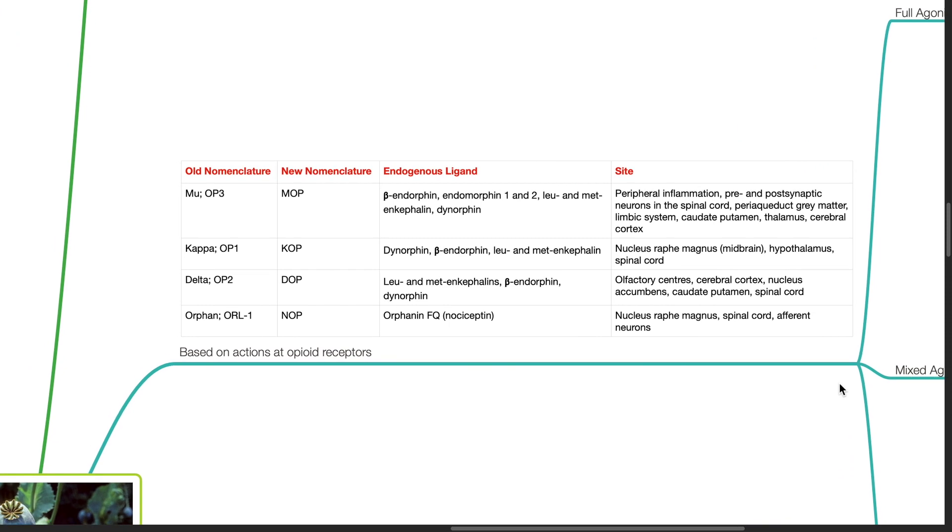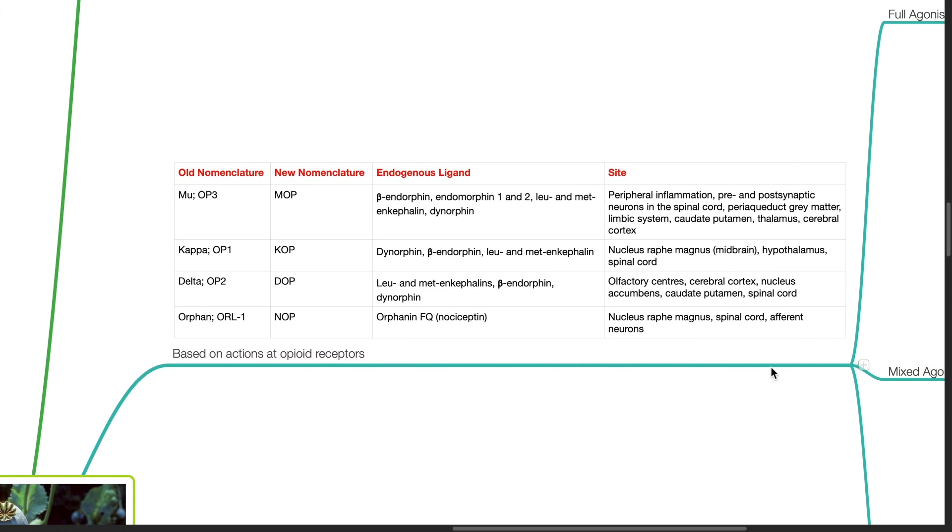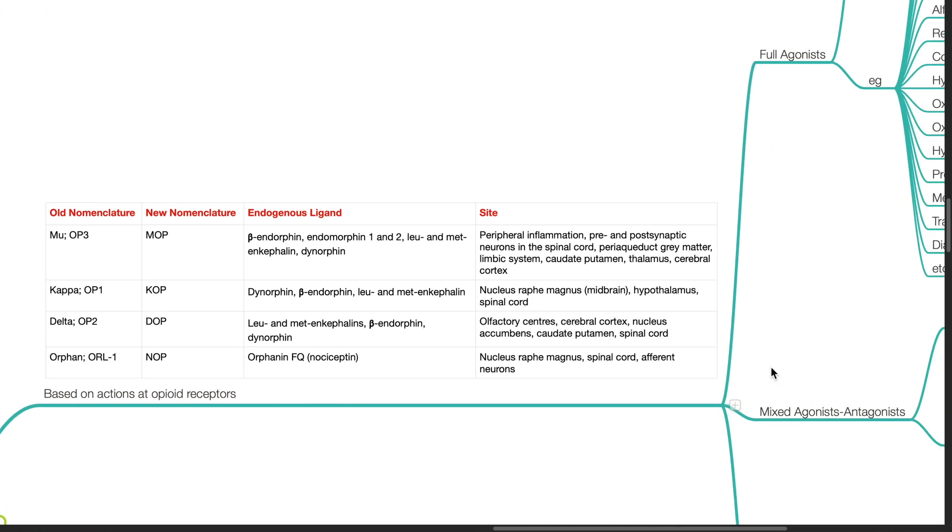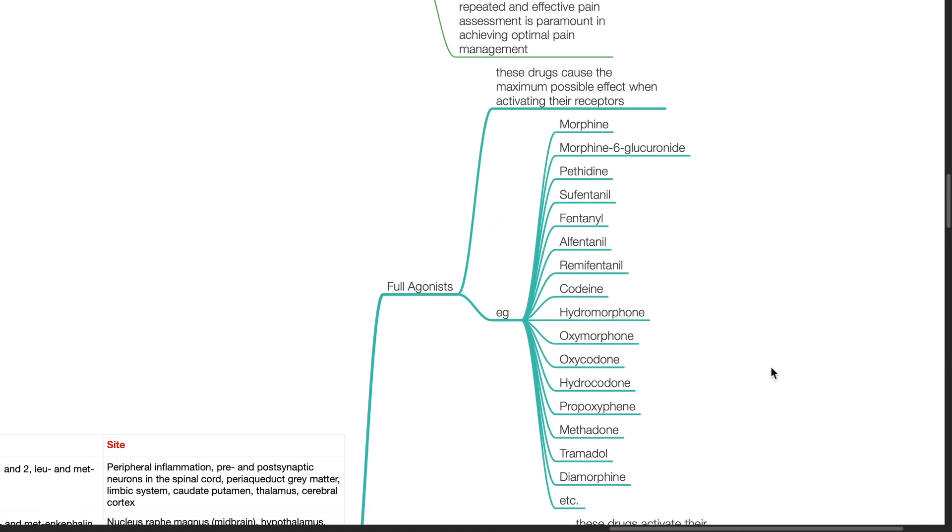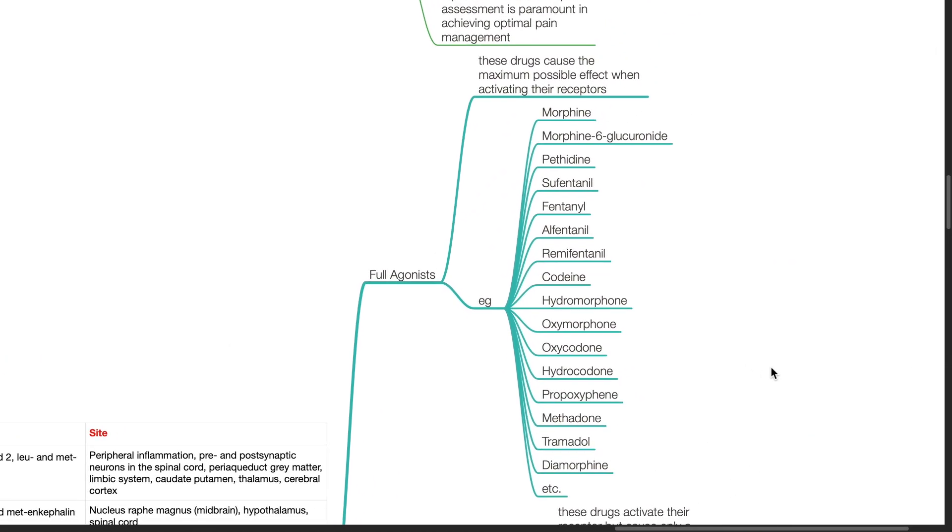Opioids can be classified based on their actions at opioid receptors. Full agonist. These drugs cause the maximal possible effect when activating their receptors.